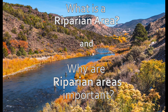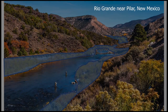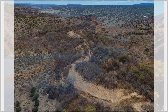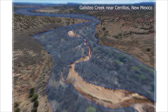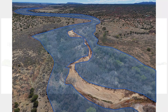A riparian area is a part of the land that is next to rivers or streams, shown in blue in the picture. By being near rivers, the soils are often wet, and the wet soils create the environment for plants specially adapted to be next to rivers. We call these plants riparian vegetation, and they are critically important for healthy rivers.